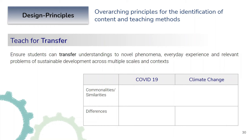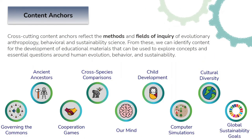Those three design principles give an overarching view, but we still need ways to bring specific content into the classroom to teach students this complex systems view of individual and societal change. That's what our content anchors are designed to do. These are cross-cutting content anchors that reflect the methods and fields of inquiry of evolutionary anthropology, behavioral science, and sustainability science, providing content for educational materials that explore concepts and essential questions around human evolution, behavior, and sustainability.